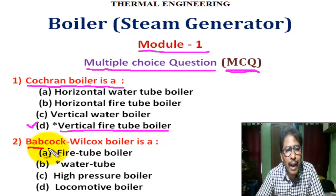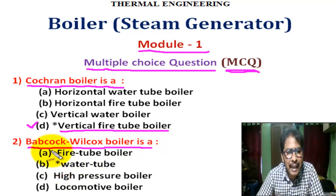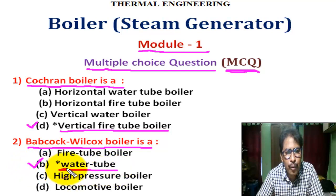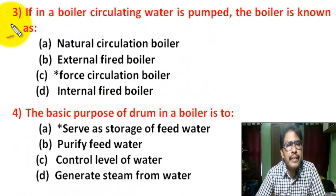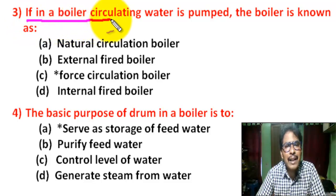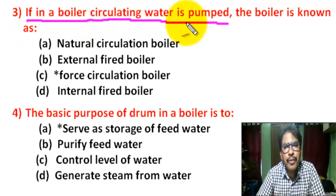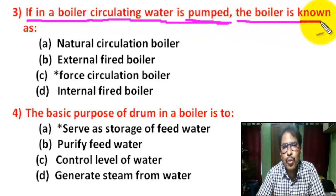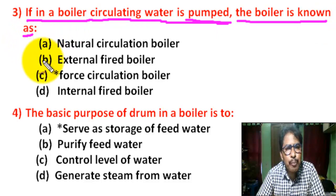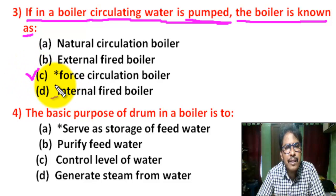Question number 2: Babcock and Wilcox boiler is a — there are four options. Correct answer is B: water tube boiler. Question number 3: If in a boiler, circulating water is pumped, the boiler is known as — there are four options. Correct answer is C: forced circulation boiler.